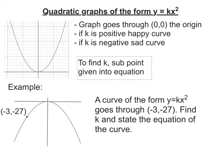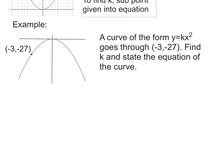So let's look at this second question here. It goes through the point (-3, -27). Now, it's looking at a sad curve, so I'll be expecting k to be a negative number. So I get my equation, y equals kx squared.